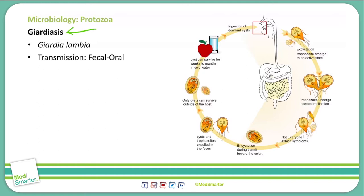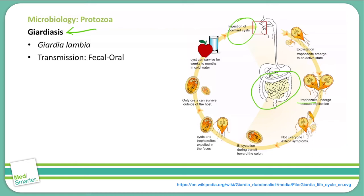As you can see on this diagram to the right, we will start at the top where a human ingests the dormant cysts. They undergo excystation, which is removing the organism from the cyst form into a trophozoite form. That is where these organisms undergo asexual replication, and then as the organism moves towards the colon to be expelled from the body, it re-encysts itself — encystation.